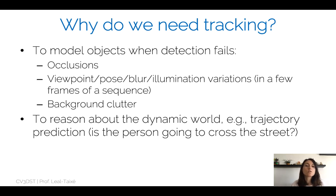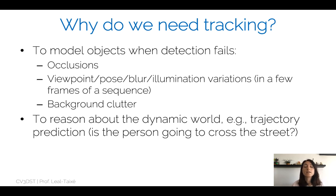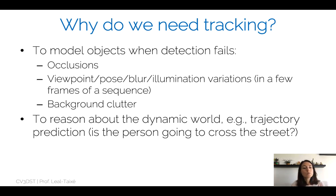When an object goes through occlusions, it would be nice to have an idea of where the object might be. The same applies to viewpoint changes, pose changes, motion blur, and illumination changes — all kinds of artifacts that might make our detector fail so we can no longer detect the object in that frame. In this case, tracking allows us to have an idea of where the object might be given the previous trajectory. Background clutter is another problem that might make our detector fail.